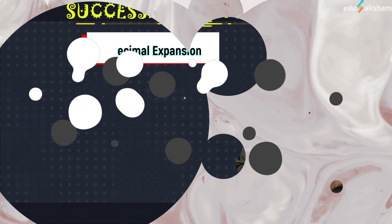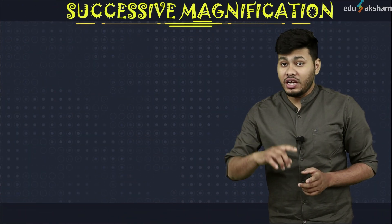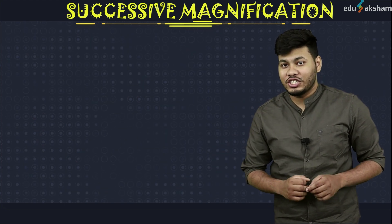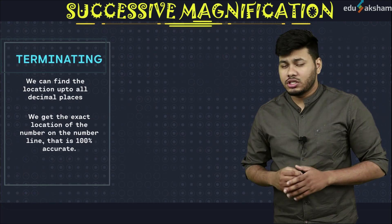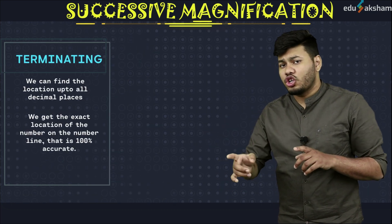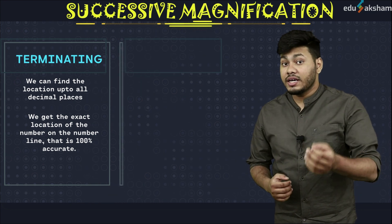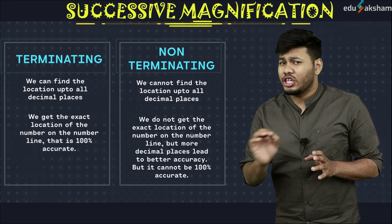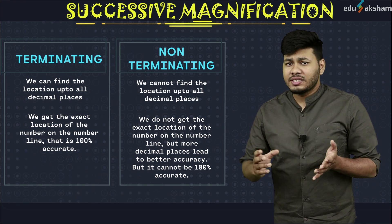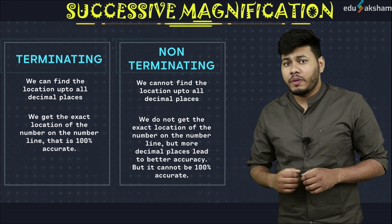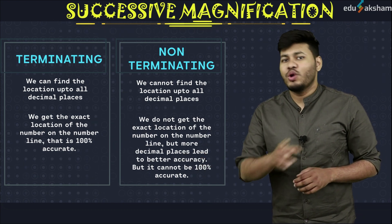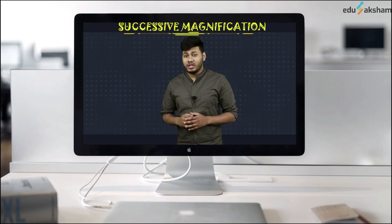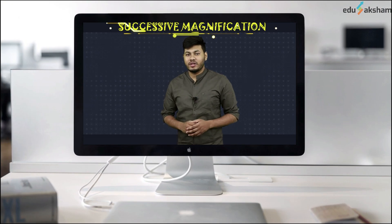In this video, what we learnt is that the decimal expansions of real numbers can be plotted on the number line using the process of successive magnification. In the case of terminating decimal expansions, we can find the exact location of the number. But in the case of non-terminating decimal expansions, we won't be able to find the exact location — by finding more decimal places we may increase accuracy, but we will never reach 100% accuracy. Hope you enjoyed the video. See you in the next one. Happy learning!